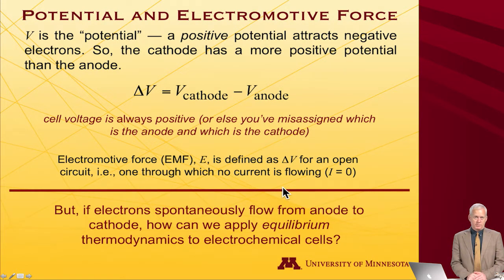But that raises a question. Up to this point in the course, we've pretty much dealt exclusively with what's known as equilibrium thermodynamics, systems in equilibrium. But if electrons flow spontaneously from an anode to a cathode because of a large potential difference, how does one apply the principles of equilibrium thermodynamics?